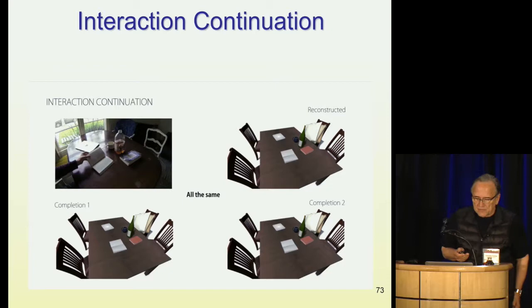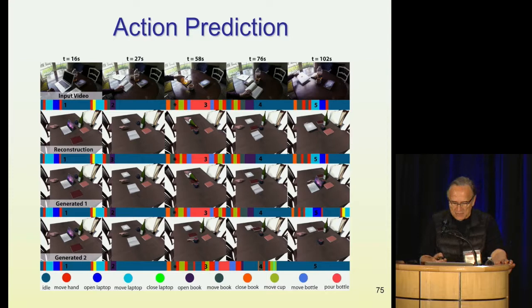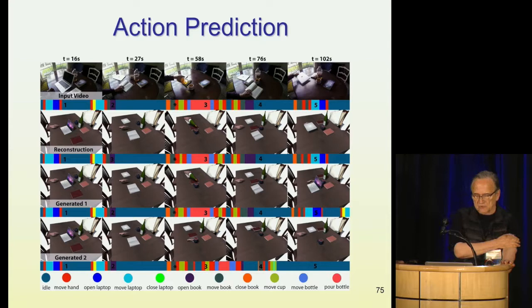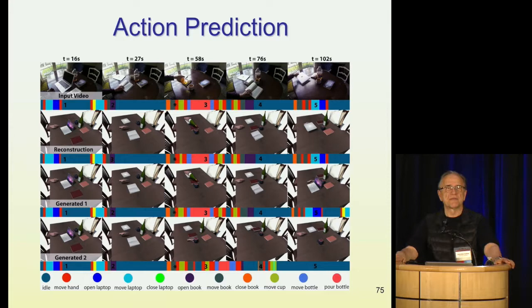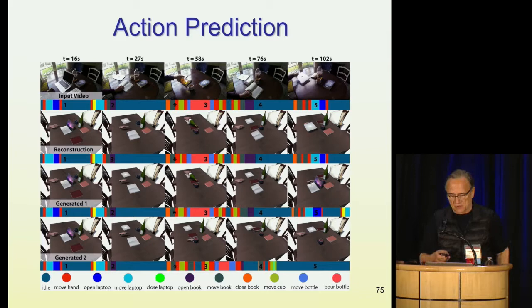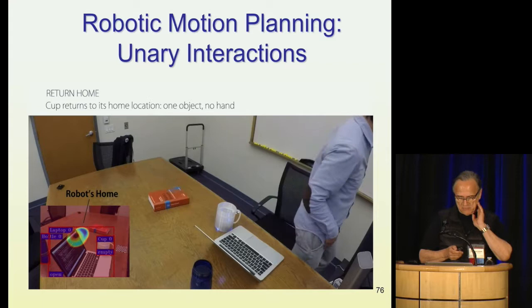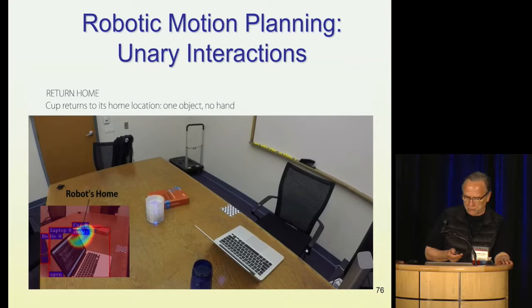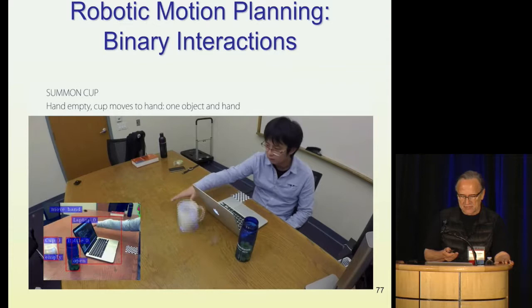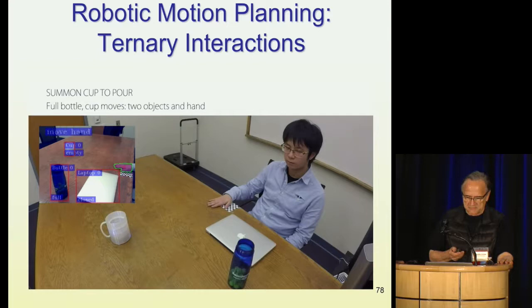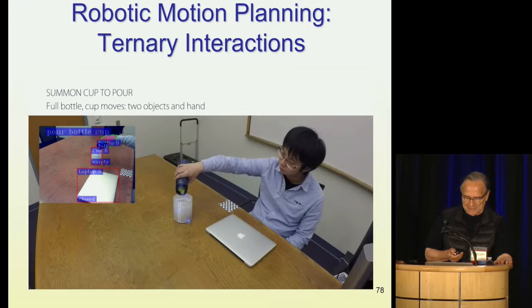On the top you see the actual video. The second row is the reconstruction and the other two are generated interactions that are plausible continuations of an initial part of the video. We also looked at a small real experiment where a cup sits on a robotic platform. When the user moves away, the cup goes to a canonical position. When the user extends the hand, the cup comes to the user. When the user grabs the bottle, the cup comes to the user — showing that it's possible to infer intent and have a smart environment that responds to the user.